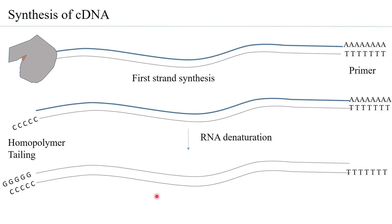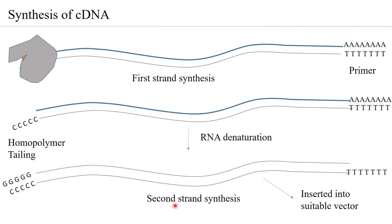What you effectively get is a cDNA duplex that was originally derived from the mRNA. This is called second strand synthesis. This cDNA can now be inserted into a suitable vector, because it is a DNA fragment — the gene without the introns — an intron-less fragment of DNA that can act as a gene.